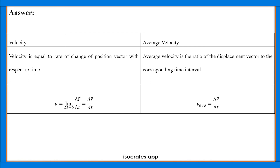Here you can see the mathematical representation. Velocity is: limit as Δt tends to 0 of Δr vector divided by Δt, which equals dr/dt — the rate of change of position vector with respect to time. Average velocity is Δr vector divided by Δt, where Δ means the difference between final and initial values. So the difference between the final and initial position divided by the time interval gives us the average velocity.